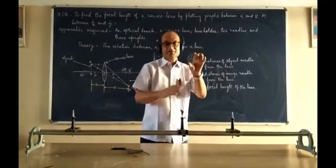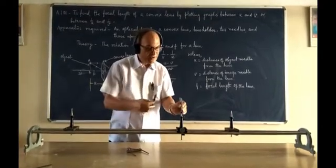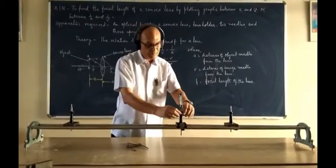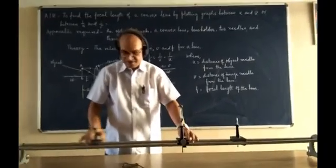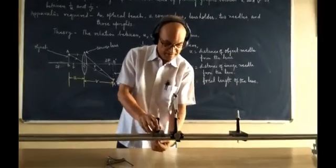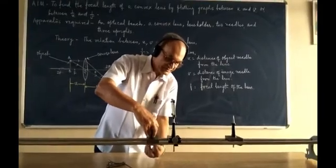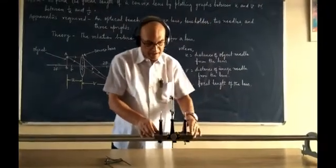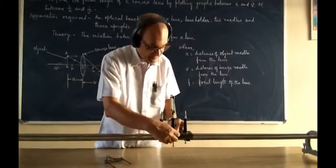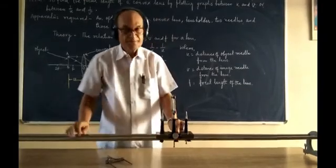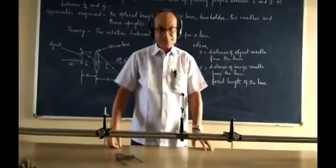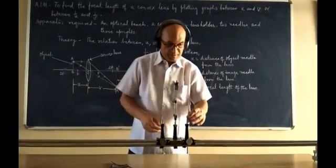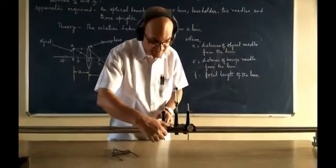This is the convex lens. We fix it in the holder and tighten it. Now bring the uprights together and keep all of them in a straight line by moving the screws.